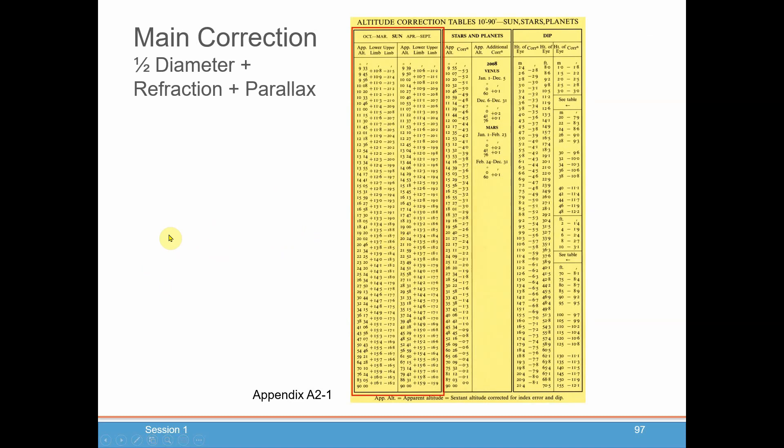For the sun, which is probably what you'll mostly be taking sights on, all of these corrections are all put together into one little table for you. So you don't have to think about each individual correction. They're all put together for you. So for the sun, the corrections are either based on the time of year, so either October through March or April through September. And the reason for that is because depending on where the Earth is in its orbit around the sun, we're either farther away or closer to it. So this table is broken up this way to take that small difference in distance from the sun into account.